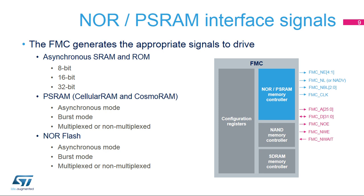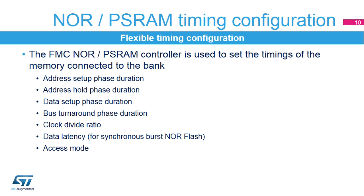The external memories are connected either to the NOR PSRAM controller or the NAND controller, and share address, data, and control signals. The NOR PSRAM controller allows the configuration of various timing parameters including: address setup phase, duration of the first access phase, address hold phase, duration of the middle phase, data setup phase, duration of the second access phase, bus turnaround phase, clock divide ratio (number of HCLK cycles within one memory clock cycle), and data latency (number of clock cycles to be issued to the memory before the first data transfer).